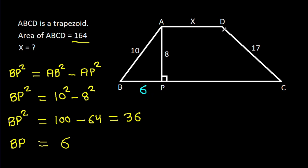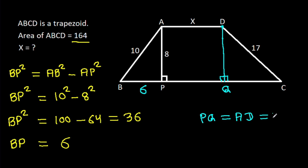And from point D, if we make a perpendicular on BC, suppose this point is Q. Then PQ will be equal to AD, that will be X. So PQ is X. And BQ will be equal to AP, that is 8. So BQ is 8.